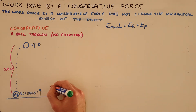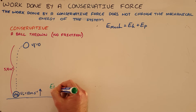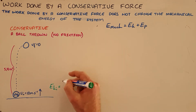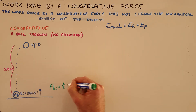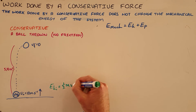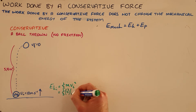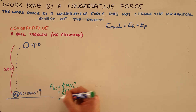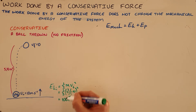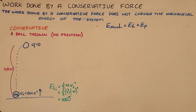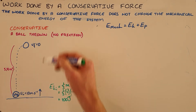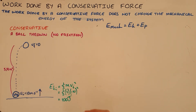We can start by calculating the initial kinetic energy of this object. Kinetic energy is one half times the mass of the object multiplied by its initial velocity squared. In this case that is one half times 2 times 10 squared, which gives us an initial kinetic energy of 100 joules.